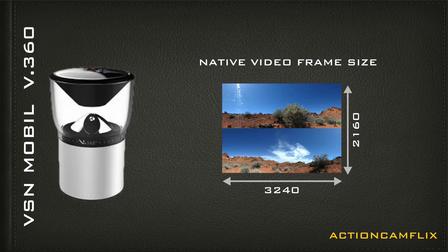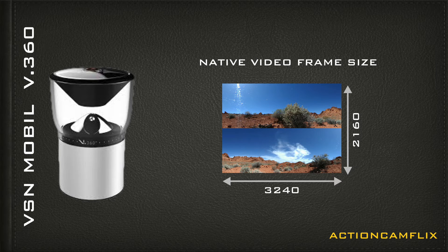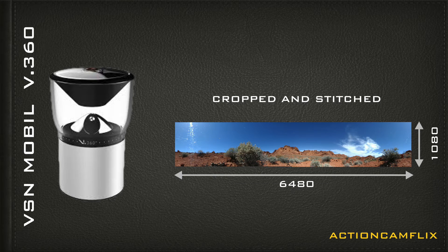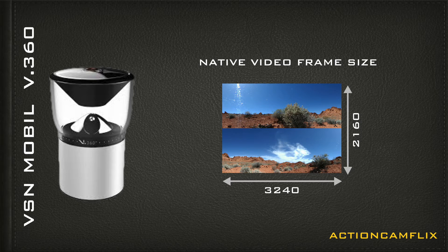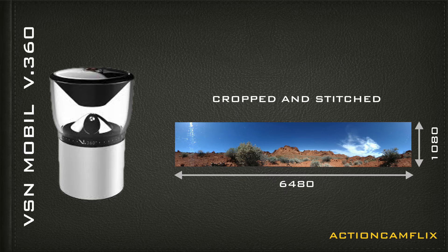The dimensions of the video that come out of the camera are 3240 by 2160. The YouTube panorama player does not recognize this video format and it won't stitch the video into a panorama. You must first convert this into a panorama before you load it to YouTube. Your camera is actually recording at a native resolution of 6480 by 1080, but the video files out of the camera are stacked.